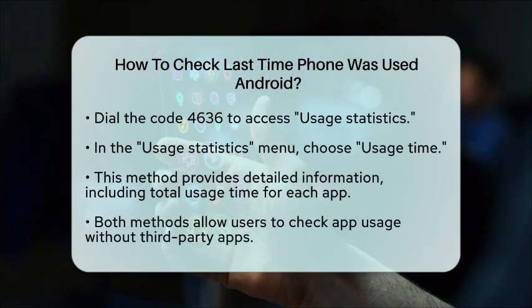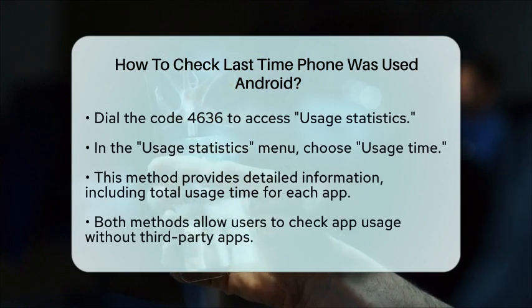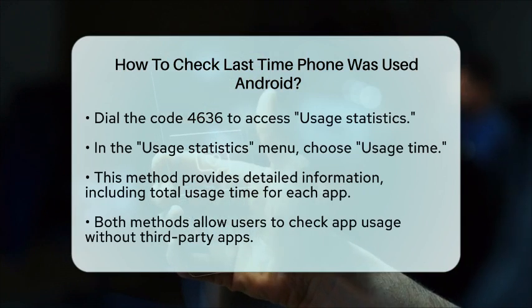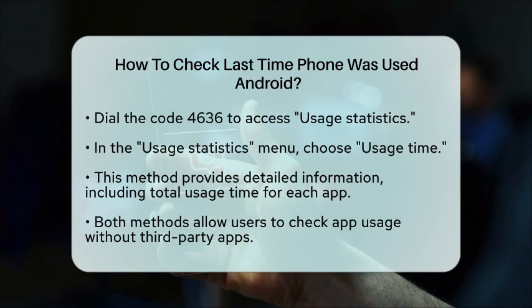Here you'll see a detailed list of all your apps, including the last time you used each one and the total time you've spent using them. This method provides more detailed information, including the total usage time for each app, which can be very helpful if you're trying to manage your screen time or monitor your app usage.